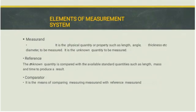There are three important elements of the measurement system: Measurand, Reference, and Comparator. The measurand is a physical quantity or property such as length, angle, thickness, or diameter to be measured — it is the quantity to be measured. The reference is the standard against which the unknown quantity is compared, such as length, mass, and time, to produce a result. The comparator is the means of comparing the measured quantity with the reference.